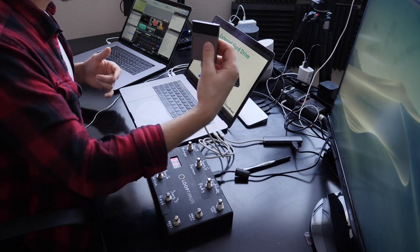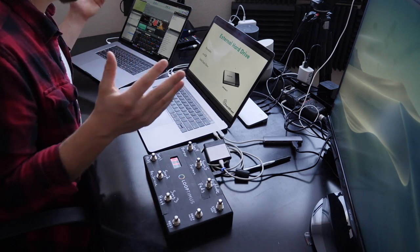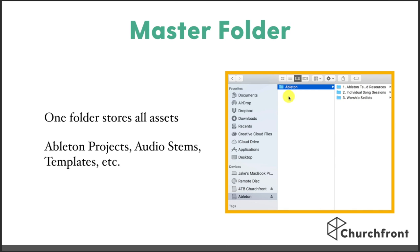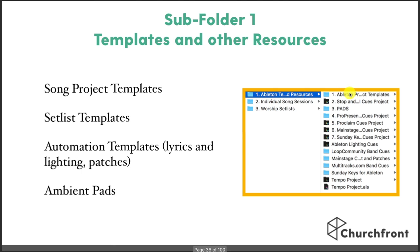I've been building tracks for almost four years and I only take up about 200 gigs worth of space on my hard drive, so fortunately audio doesn't build up as quickly as video does. On that hard drive I have a master folder called Ableton that contains all of my Ableton Live assets. I keep everything in there so if I need to transfer to a new hard drive, I can easily just copy that one folder and it's all there. Then I have three subfolders within that Ableton folder.